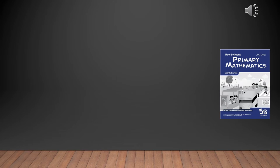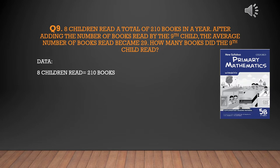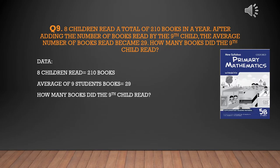Question number 9: 8 children read a total number of 210 books in a year. After adding the ninth child, the average number of books read becomes 29. Here we are talking about 8 children, not the ninth child. Then they add another student — student number nine — and we are told the average of books read by the nine students is equal to 29.